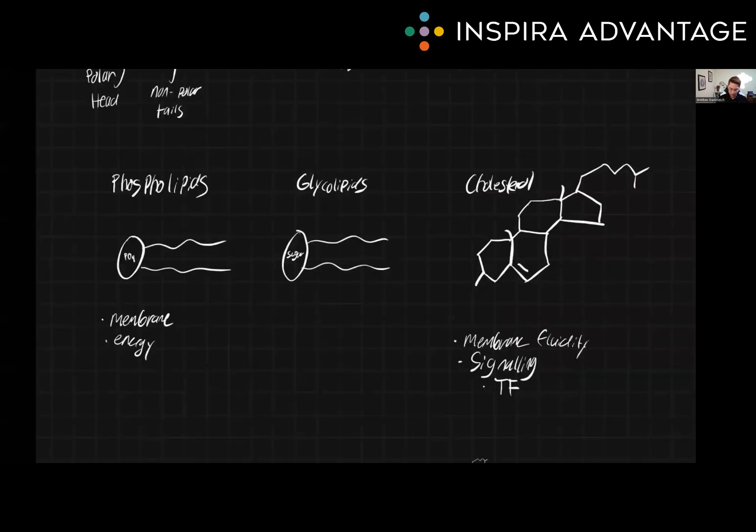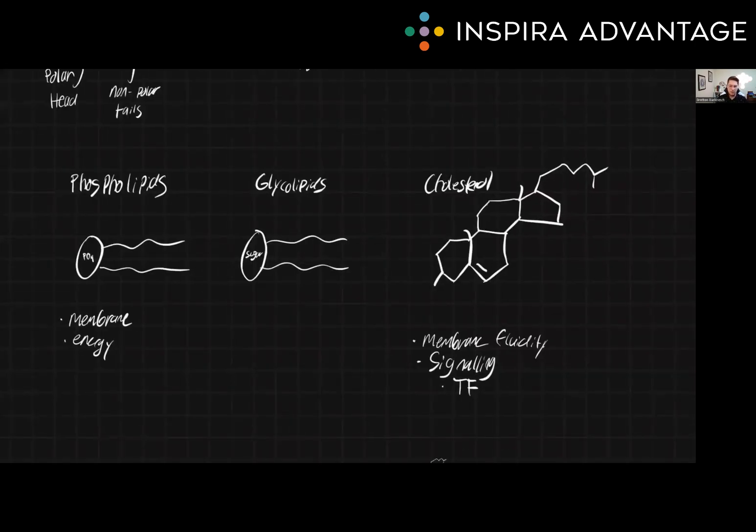There are several types of lipids that you'll want to know for the MCAT. These include phospholipids, glycolipids, cholesterol, and triglycerides. Phospholipids are the main component of biological membranes, and they consist of a polar head group and two fatty tails. Glycolipids contain a sugar molecule within the head group, as well as two fatty acid tails.